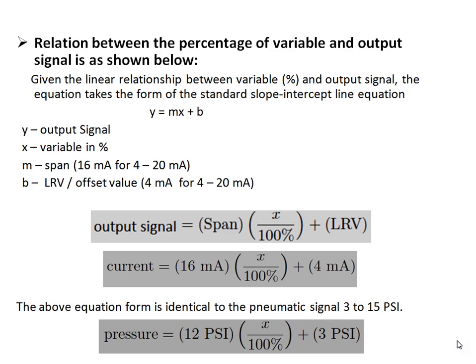The output signal equation is: output signal = span × percentage variable + lower range value. For 4 to 20 mA current output, this becomes: current = 16 mA × percentage variable + 4 mA. This form is identical to the pneumatic signal output of 3 to 15 PSI, which takes the form: pressure = 12 PSI (the span) × percentage of variable + 3 PSI, which is the low range value.